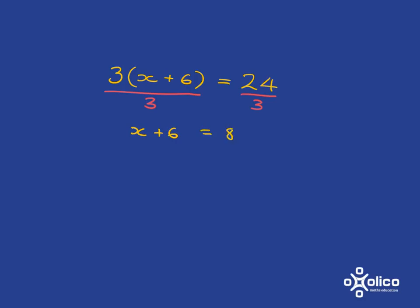We still haven't got x on its own, so we need to work further. And here we need to find the inverse of adding 6, which of course is subtracting 6. And what we do to one side of an equation, we must do to the other. And so we will get our solution, x is equal to 2.